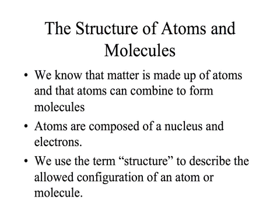But for now we're going to talk about quantum mechanics. We do know that matter is made up of atoms and that atoms can combine to form molecules. We know that atoms are composed of a nucleus surrounded by electrons. We use the term structure to describe the allowed configuration of an atom or a molecule. From your high school chemistry, you'll recall that atoms have electrons around them — electrons exist in orbitals or shells, as they're called.